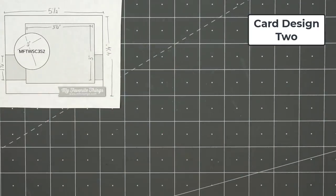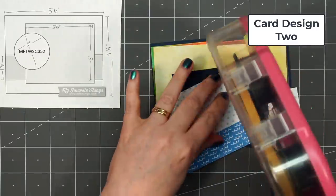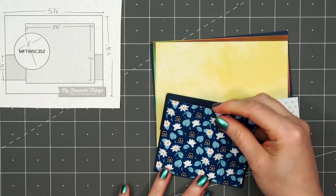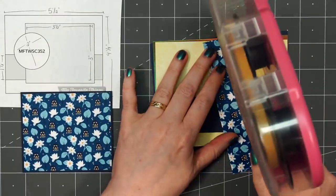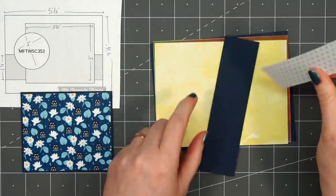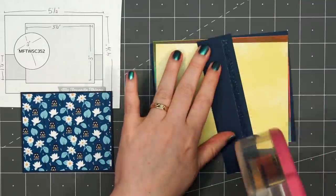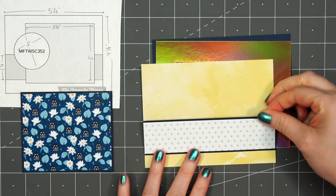For card design number two, the card sketch is from MFT. It's number 352. For the very background of the card, I'm using some of the yellow watercolor whimsy paper. Then I have two patterned papers. One has lots of little flowers, and there's rainbow and fish, and also this strip of white patterned paper with the tiny blue stars. I'll layer those on some dark blue cardstock. I'll add this white strip across the card first.